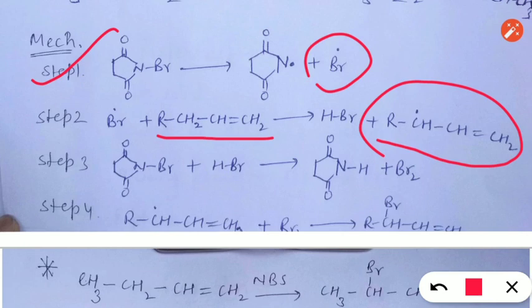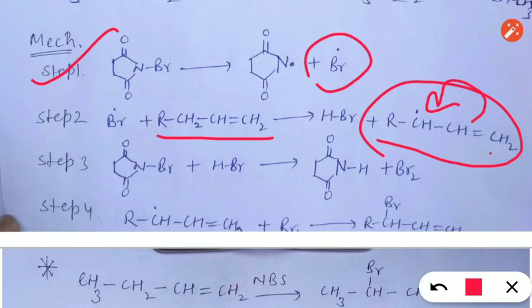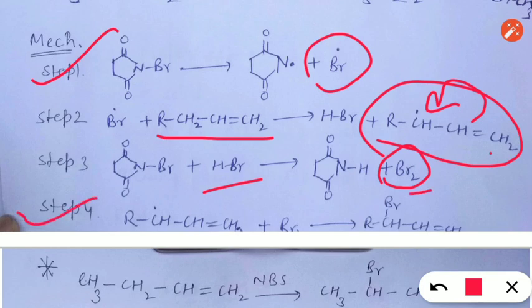This allylic radical is more stable due to resonance, because the double bond can delocalize and the radical can move to different positions. In the third step, the unreacted N-Bromosuccinimide abstracts a hydrogen from hydrogen bromide, producing bromine. In the fourth step, this bromine reacts with the radical formed in step two.